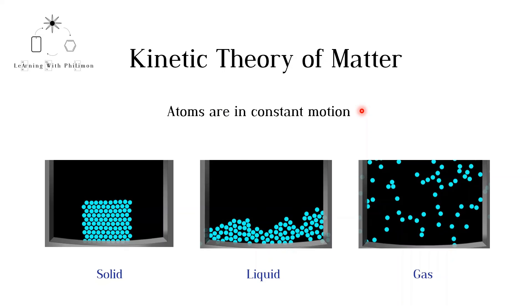In conclusion, in this video we have seen that all matter is made up of atoms, and these atoms are in constant motion. We have also seen that the arrangement of atoms differs in each state of matter.